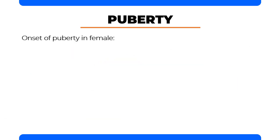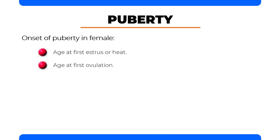The onset of puberty has many definitions in females. First is the age at first estrus or heat, in which the animal becomes sexually receptive in the presence of a male. This can also be the age at first ovulation, which can be determined through manual or visual validation. And lastly, is the age at which a female can support pregnancy. This definition is most applicable from a practical standpoint in all domestic animals and humans.